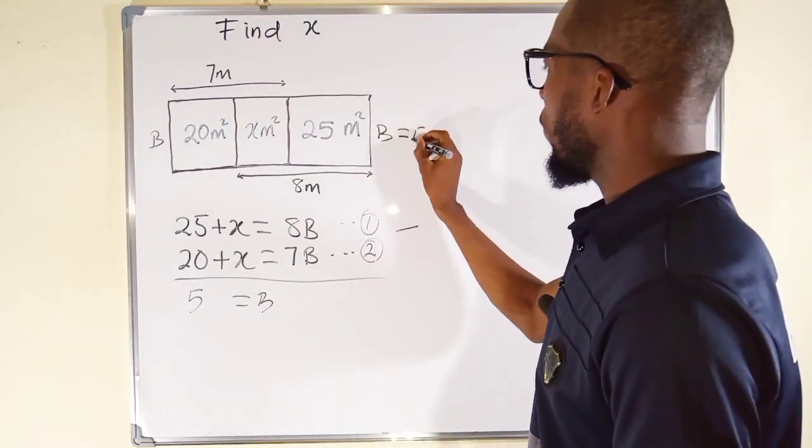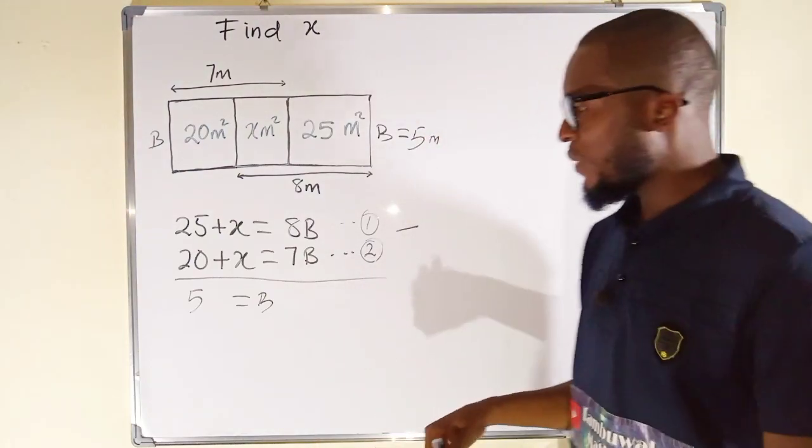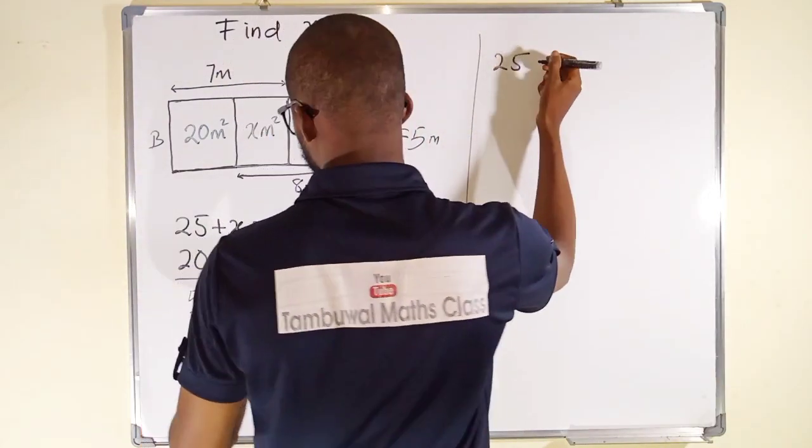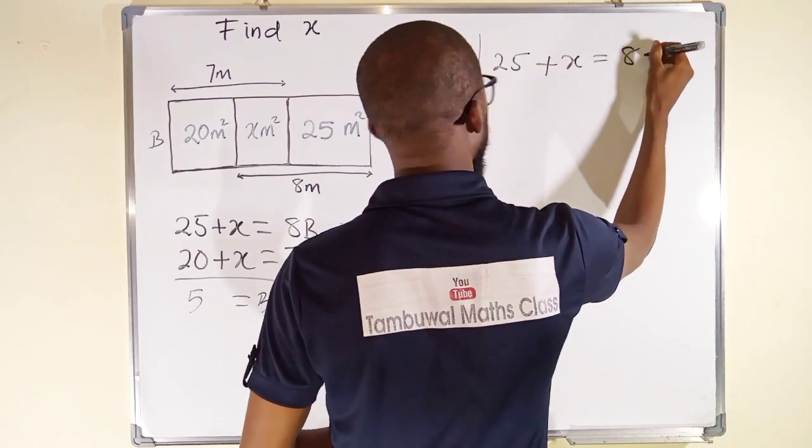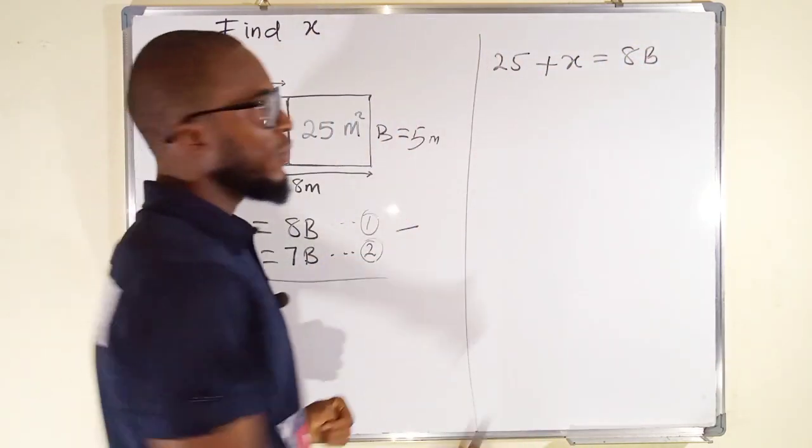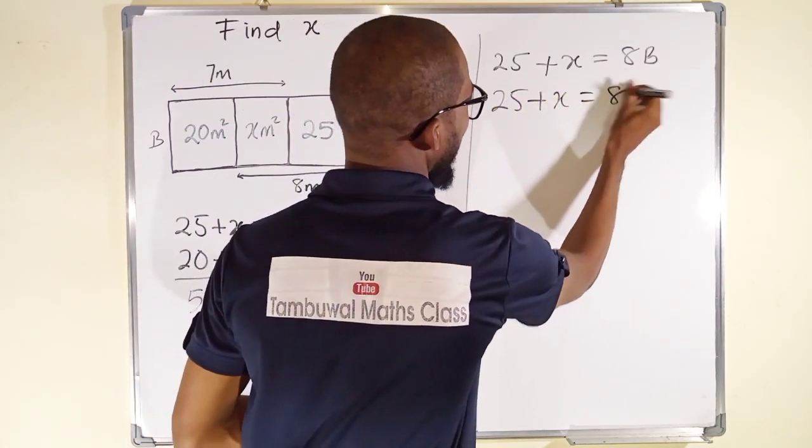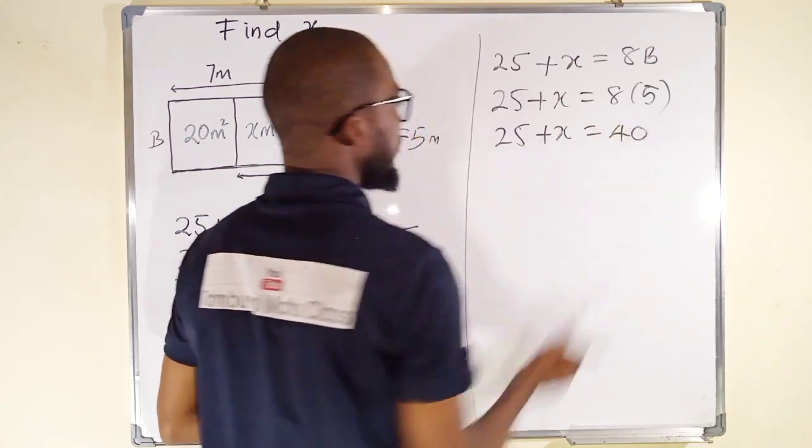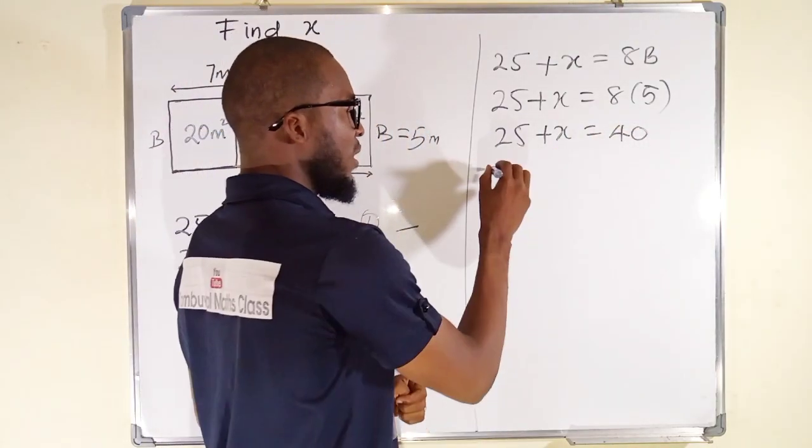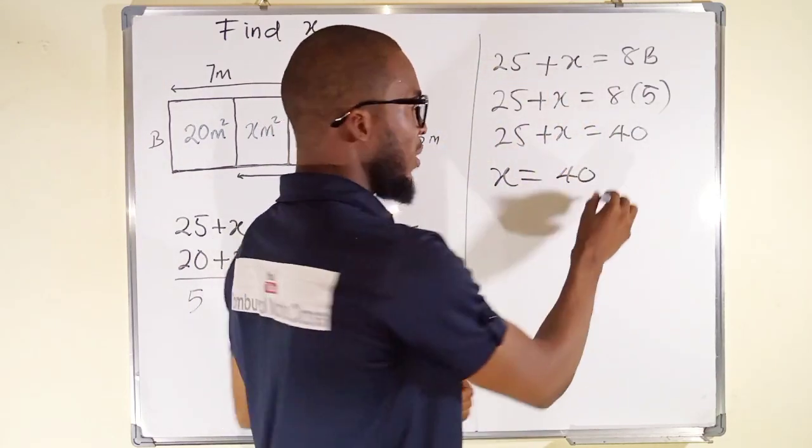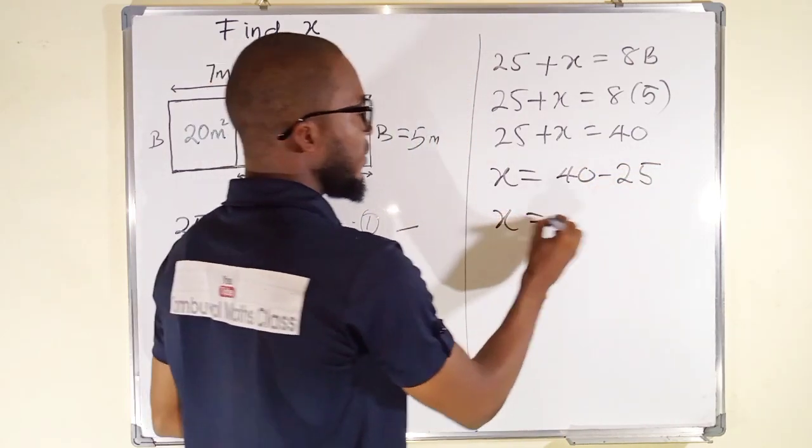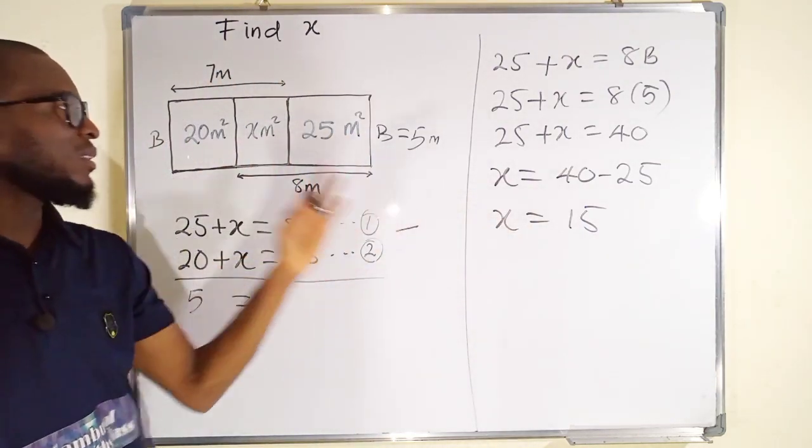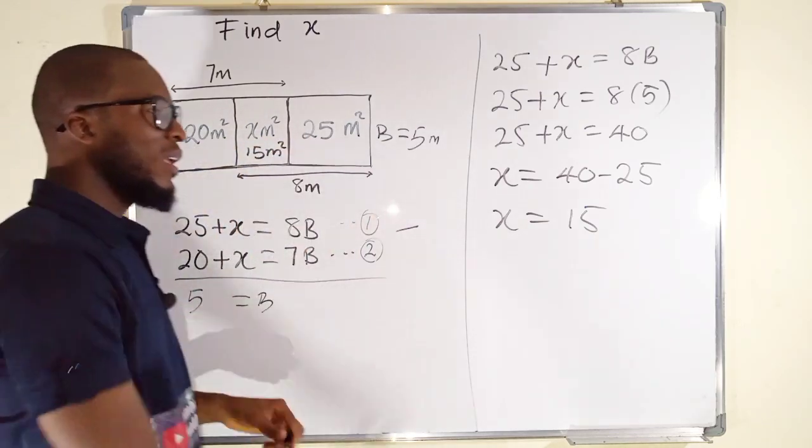We can now substitute the value of 5 in either equation 1 or equation 2 to obtain the value of X as required. Okay, now we can say that 25 from this first equation plus X is equal to 8B. But we know that B is equal to 5. We can say that 25 plus X is equal to 8 multiplied by 5. And 8 multiplied by 5 is 40. So, we have 25 plus X is equal to 40. What we do next is to make X a subject here. X will now be equal to 40. This one crosses over becomes 25 negative. X finally is equal to 15 because 40 minus 25 is 15. And hence, the area of the middle rectangle is 15 meter squared. This is 15 meter squared. And this is all I have for you today.